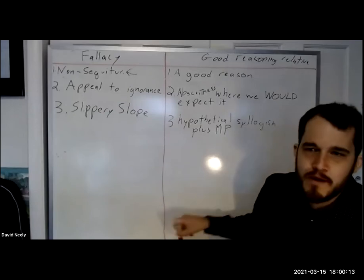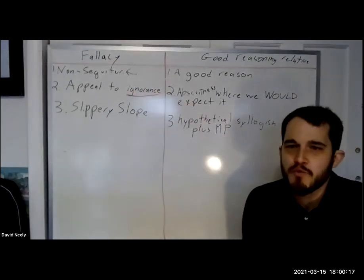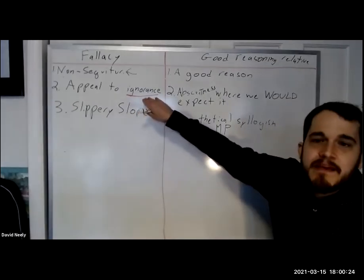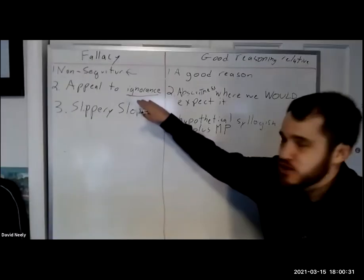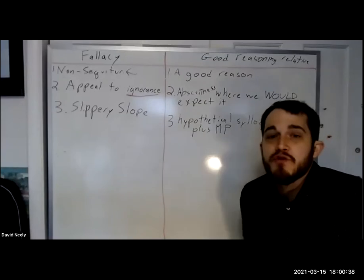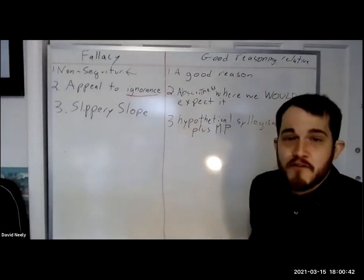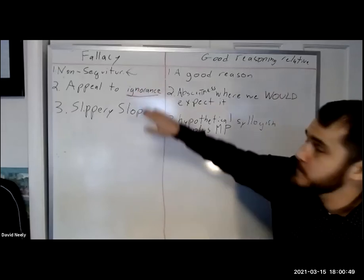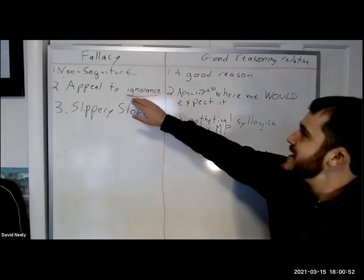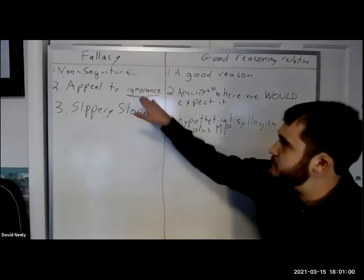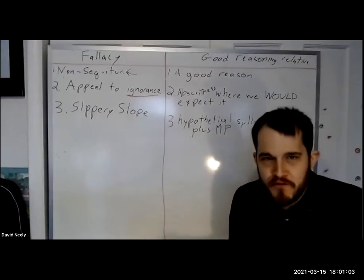Appeal to ignorance — what do we mean by ignorance? Somebody who is ignorant, not in the derogatory sense, but in the original sense: what does it mean to be ignorant of something? To not be knowledgeable. Ignorant became an insult, but originally it just meant not knowing. An appeal to ignorance is a case in which somebody, instead of pointing to actual proof of something, points to a case in which there's no proof that it doesn't exist.